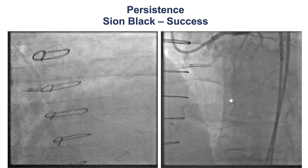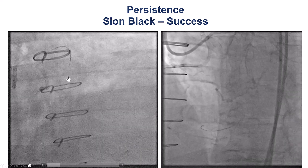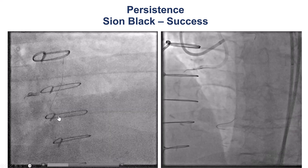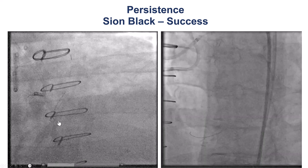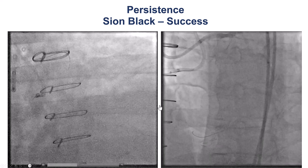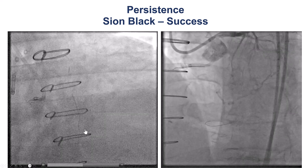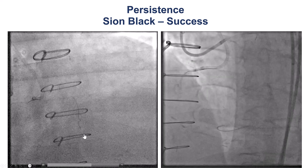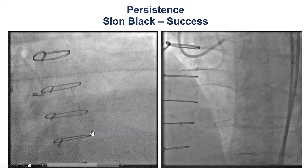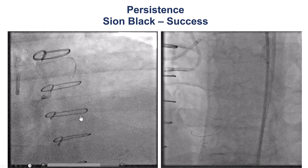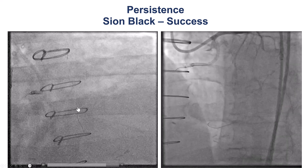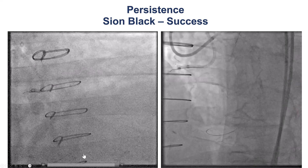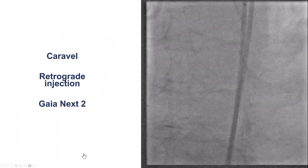Eventually, trying again with the C-on-black, we were able to advance it through the septal until it crossed into the posterior descending artery. Part of the lesson here is that sometimes one has to be patient and persistent. Finding the pathway through the septals can be tricky, but eventually can be achieved. And again, the C-on-black is a very useful wire for this crossing.